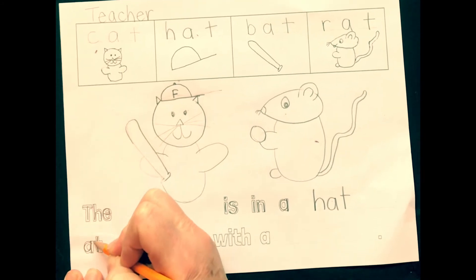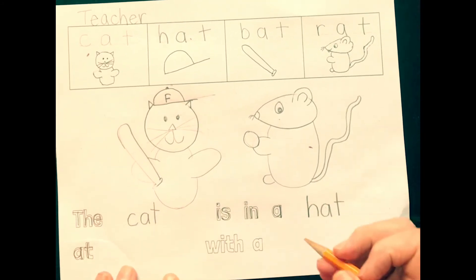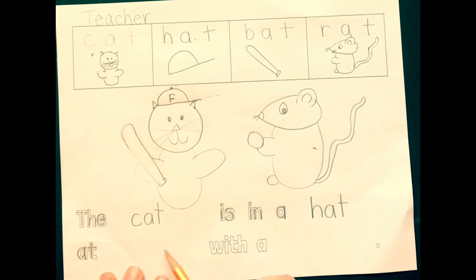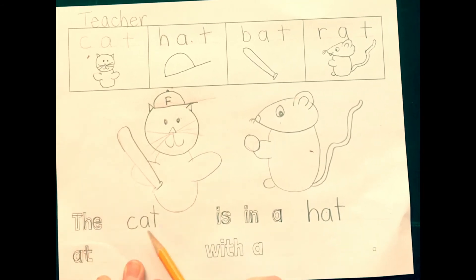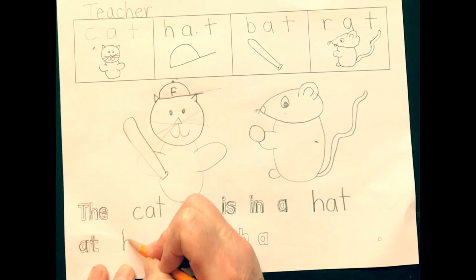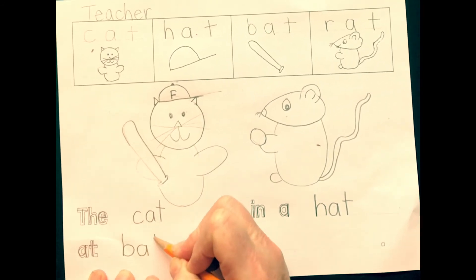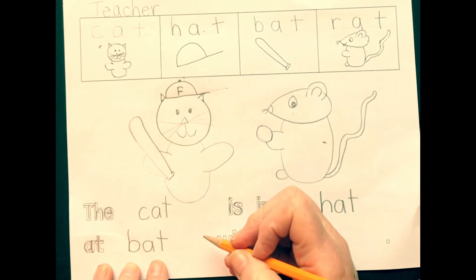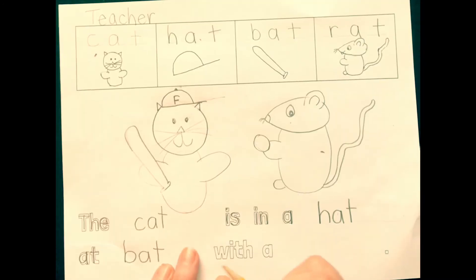At. And we're not going to make the curvy T. And I reread to see what word is next. The cat is in a hat. At. Bat. B-A-T. And my letters are close together in a word, but not touching. Now my space.